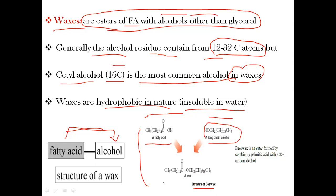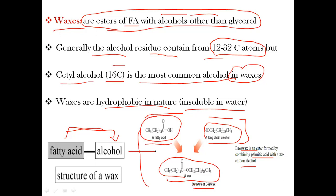A specific example is bee wax, which is an ester formed by combining palmitic acid with a 30-carbon alcohol. The 30-carbon alcohol combines with palmitic acid to form bee wax.